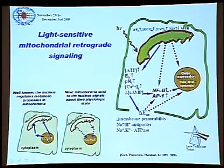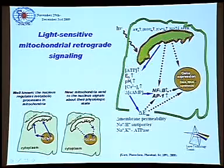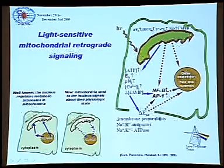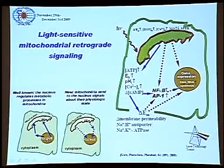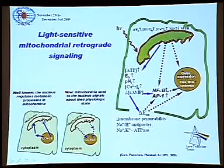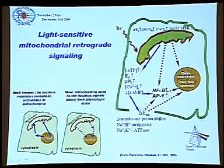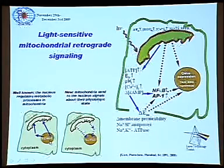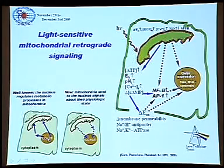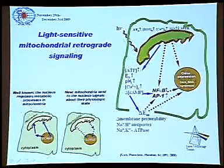Until recently, all biologists thought that everything in cells is ruled by the nucleus. Signals are coming to mitochondria, and the nucleus has responsibility for everything.